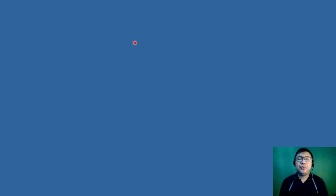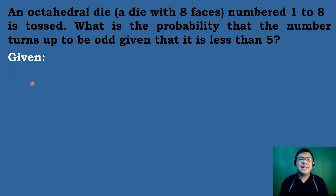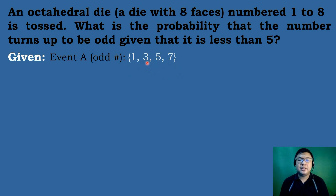Let's have our first example. An octahedral die — a die with 8 faces numbered 1 to 8 — is tossed. What is the probability that the number turns up to be odd, given that it is less than 5? Let's identify the given. Event outcomes of A, which is getting an odd number, is equal to the numbers 1, 3, 5, and 7. And the number of event outcomes for event A is equal to 4. There are 4 odd numbers in an octahedral die.